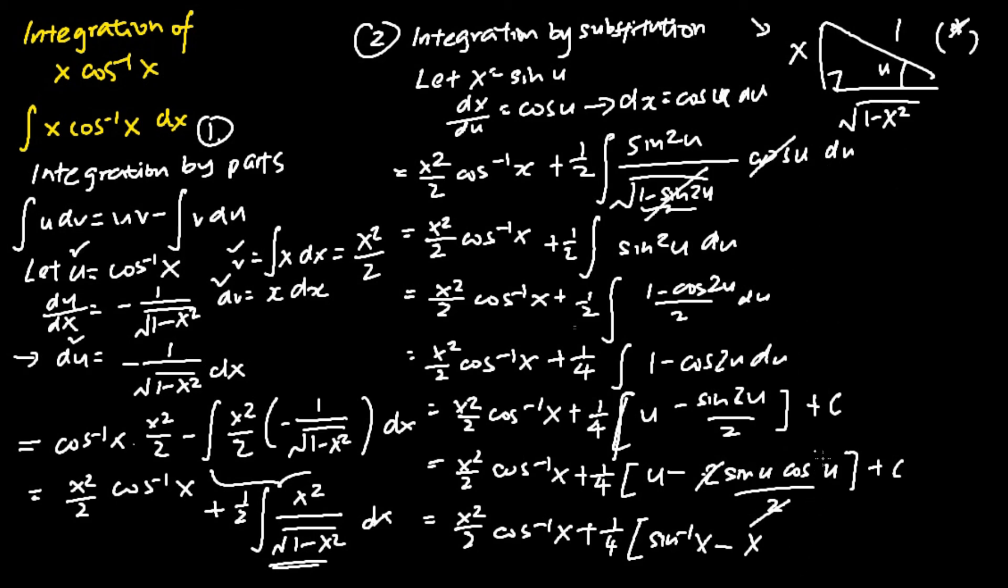So my cosine u equals the adjacent over the hypotenuse. Basically, it's just x times 1 minus x squared. My cosine u is basically just square root of 1 minus x squared over 1, which is square root of 1 minus x squared.